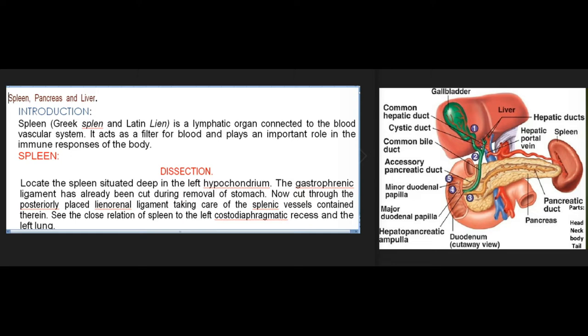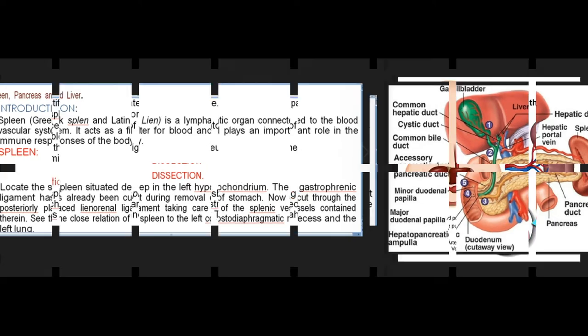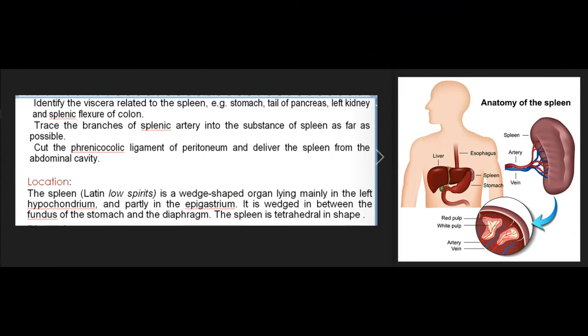Spleen dissection: locate the spleen situated deep in the left hypochondrium. The gastrophrenic ligament has already been cut during removal of the stomach. Now cut through the posteriorly placed lienorenal ligament, taking care of the splenic vessels contained therein. See the close relation of spleen to the left costodiaphragmatic recess and the left lung. Identify the viscera related to the spleen: stomach, tail of pancreas, left kidney, and splenic flexure of colon.